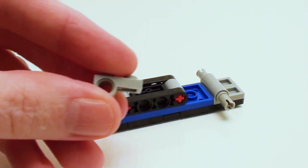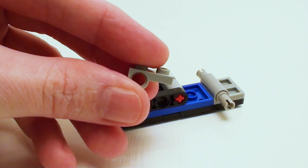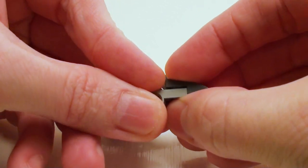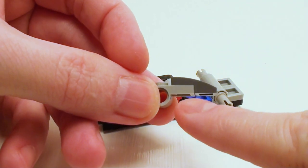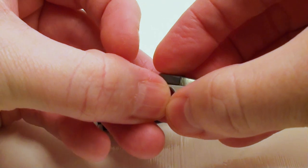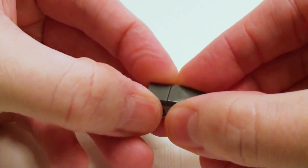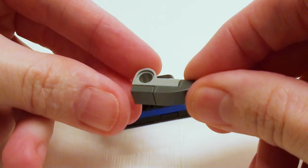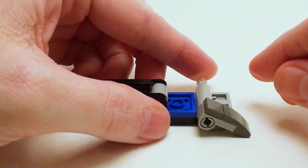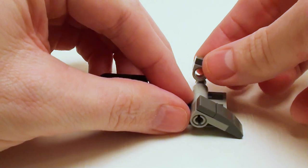For the front skis, take a modified 1 by 2 plate, a 1 by 2 plate with bow, and a 1 by 1 flat tile to smooth out the area. Make two of these and attach them onto the technic pins, placing one on both sides.